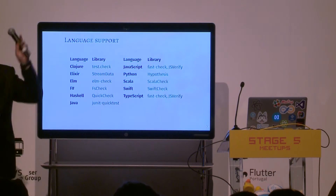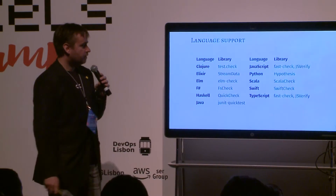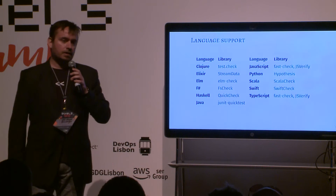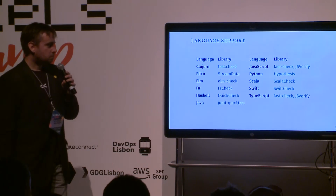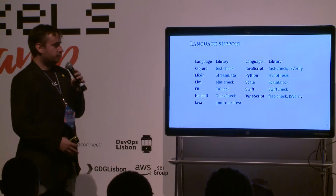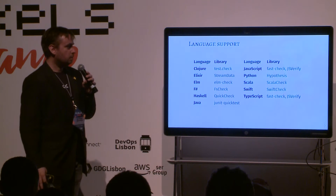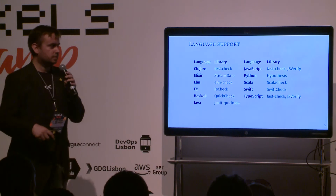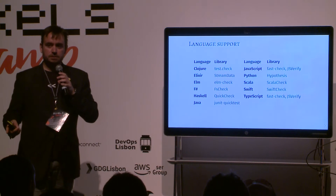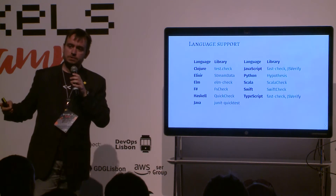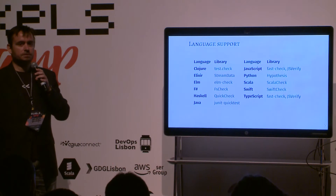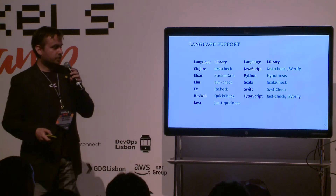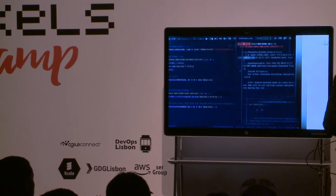The granddaddy of property-based testing libraries is Haskell with QuickCheck, which was more or less immediately adopted by other functional languages — Clojure, Elm, F#, Scala. JavaScript has a couple of libraries. JSVerify is one that does not provide automatic shrinkage, so you have to give the inverse function of your generator. FastCheck is written in TypeScript and has great support for types.